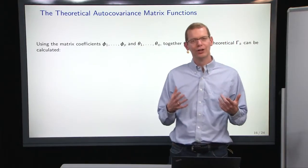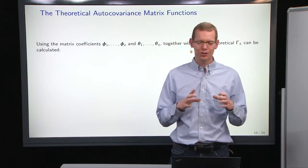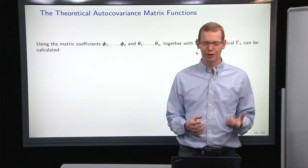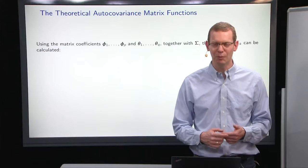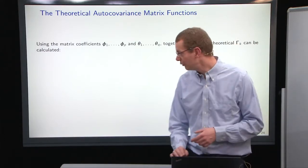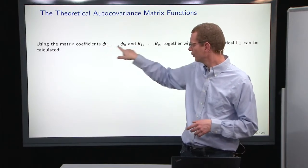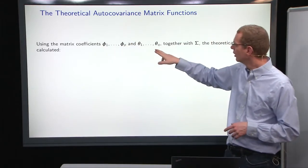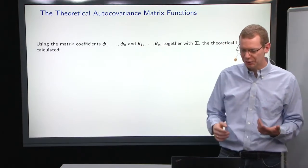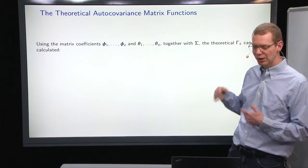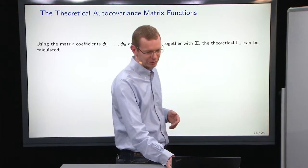Now, as for the univariate case, I like to go through the theoretical structure, how to estimate things in a theoretical setting before doing things in practice, just so that we know a little bit more about what we're doing. So if you use the representation with phi coefficients here, phi 1 to phi p for the autoregressive part, and likewise, from theta 1 to theta q for the moving average part, and then we have a covariance structure, then we can calculate the theoretical autocovariance matrix function.